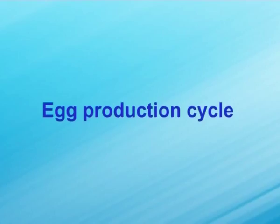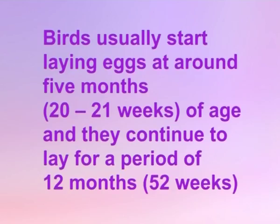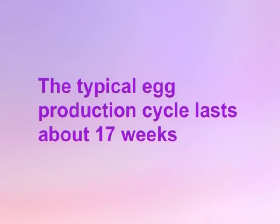Egg production cycle: birds usually start laying eggs at around 5 months, that is 20 to 21 weeks of age, and they continue to lay for a period of 12 months, that is 52 weeks. They lay fewer eggs as they near the molting period. The typical egg production cycle lasts about 17 weeks and involves several distinct phases.